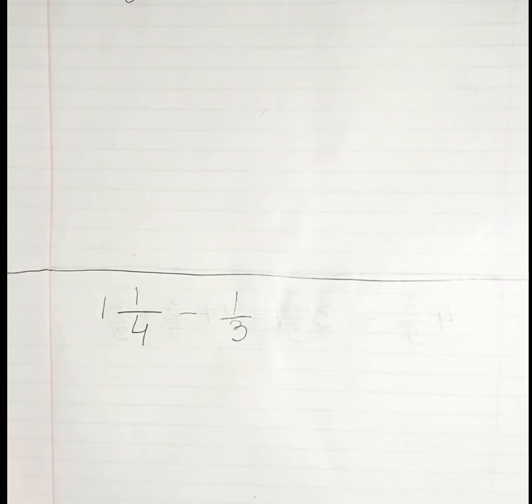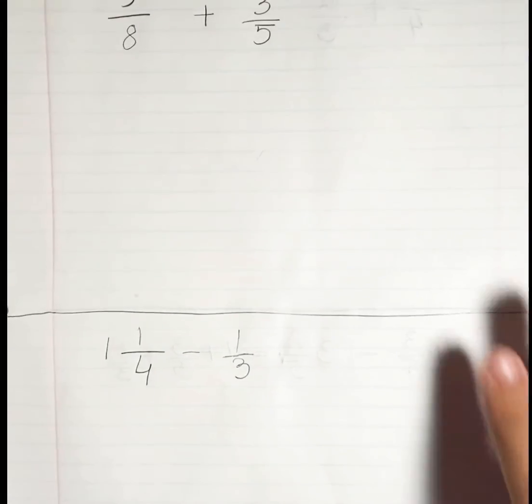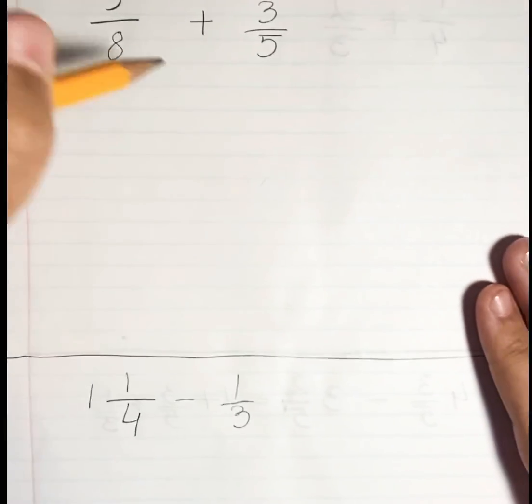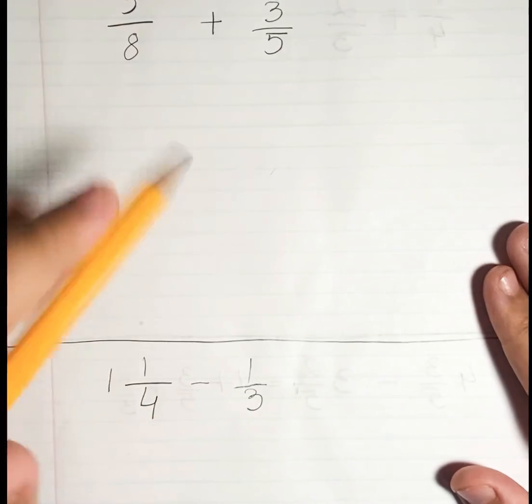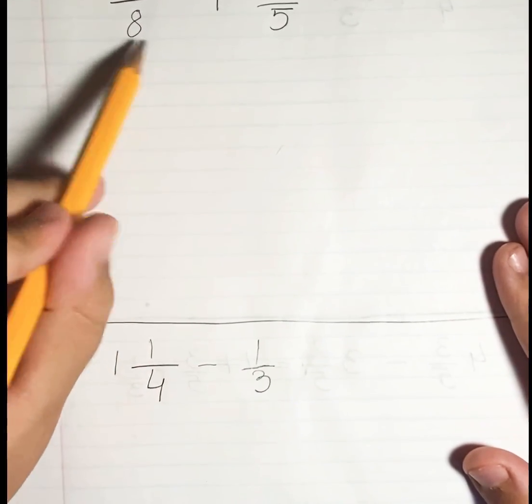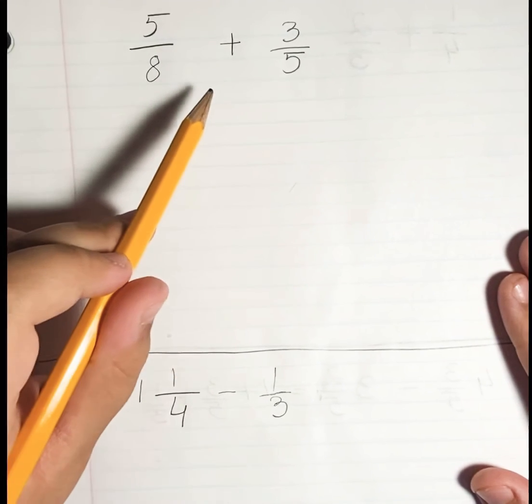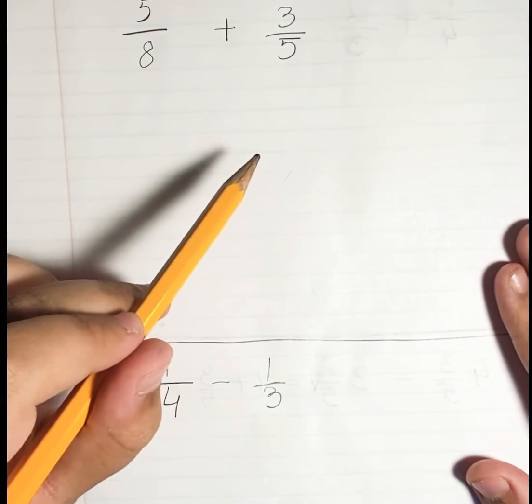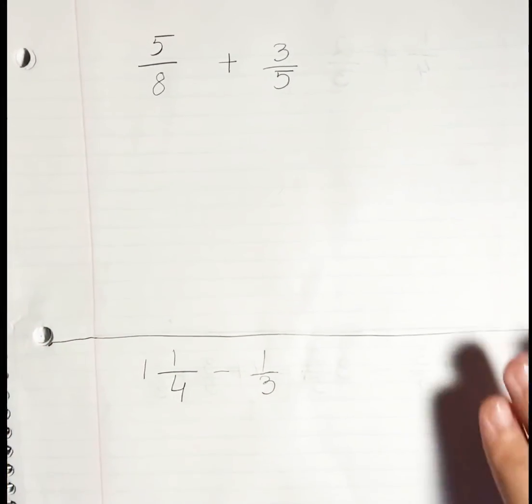So let's get started. Our first equation is 5/8 plus 3/5. At first glance, I can see that the units are not the same. The bottom units - this one is an 8 and this one is a 5. So first we need to find a common number that both can go to. For me, I'm going to be using 40 as a common unit.